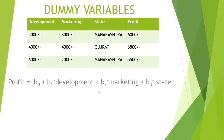So what is the problem here? There is a 'state' column, but you can't write Maharashtra or Gujarat directly in an equation — that's illogical. The state column is in word form, so we need to convert it to numerical form. This is where dummy variables come into the picture. The state column contains categorical data with categories like Maharashtra and Gujarat, and we need to convert it to numerical form using dummy variables.